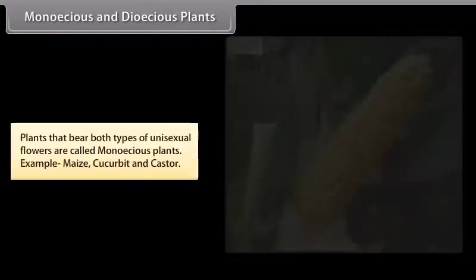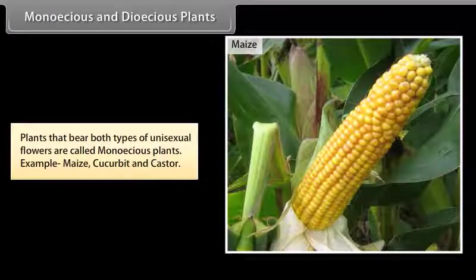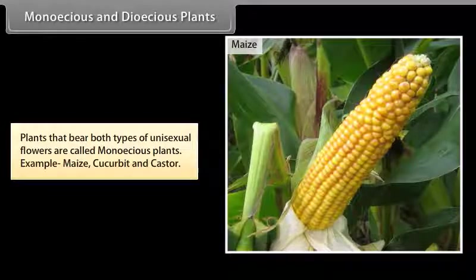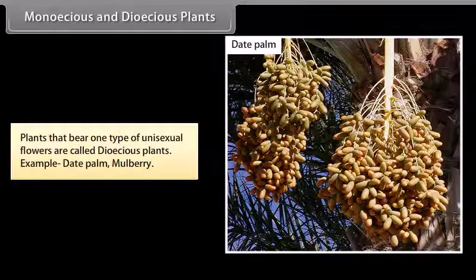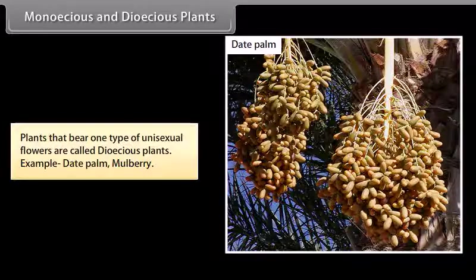Neuter flowers: plants in which flowers lack both stamen and pistil are known as neuter flowers. Examples include mango and cashew. Monoecious plants bear both types of unisexual flowers; examples include maize, cucurbit, and castor. Dioecious plants bear only one type of unisexual flower; examples include date palm and mulberry.